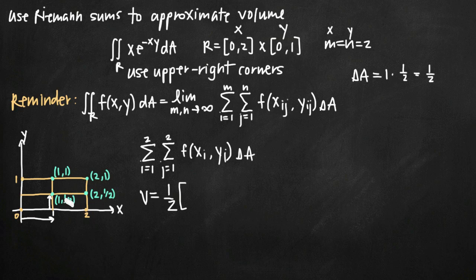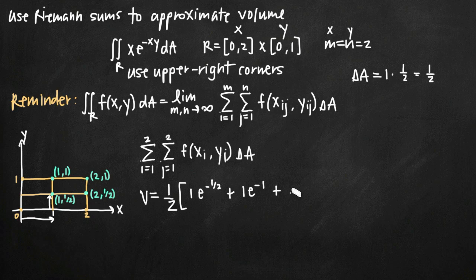Plugging in the first coordinate point (1, 1/2): we get 1 times e to the negative 1 times 1/2, giving e to the negative 1/2. Plugging in (1, 1): we get 1 times e to the negative 1. Plugging in (2, 1/2): we get 2 times e to the negative 2 times 1/2, which is 2e to the negative 1. Plugging in (2, 1): we get 2 times e to the negative 2. That's all we need to approximate the volume.